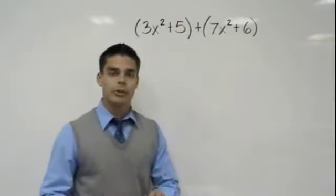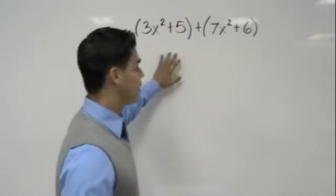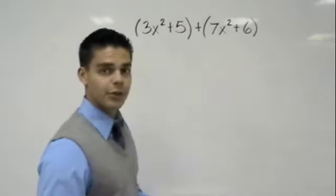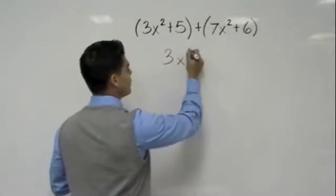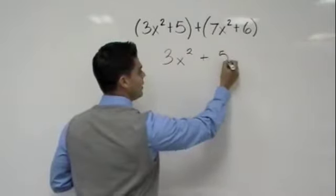Adding polynomials. Let's keep it short and simple. First thing I want you guys to do is write them on top of each other, it makes it easy to see. Start by writing our 3x squared plus 5.